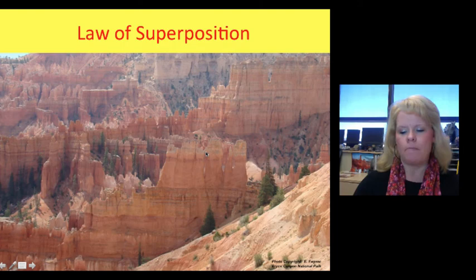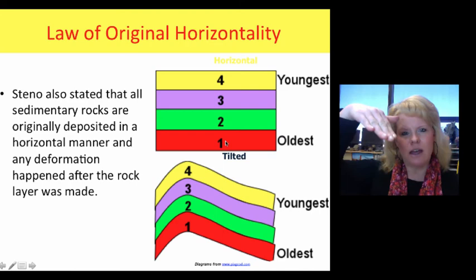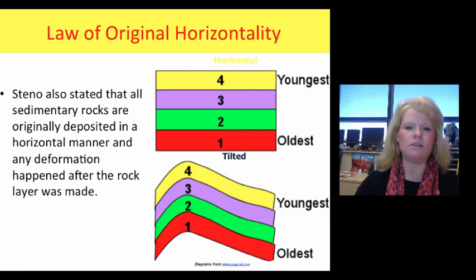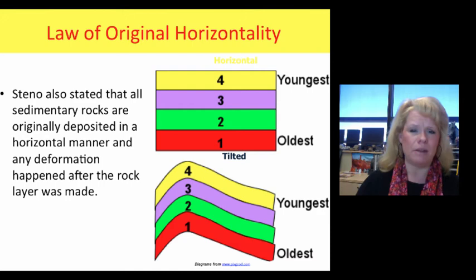Let's get to the next law, also created by Steno: the law of original horizontality. Focus on the word horizontal. Layers are laid down flat originally. Yes, they may form on an angle or a slope, but gravity tends to make fairly flat layers of sedimentary rock and even igneous rock at the surface. So these horizontal rocks can get tilted, folded, or change shape after they're made. The law of original horizontality states that any rock deformation must happen after the rocks are originally laid down flat.